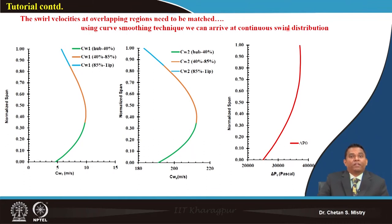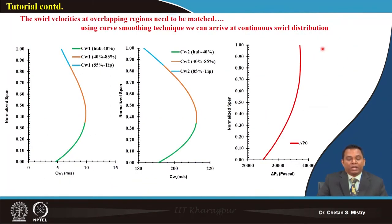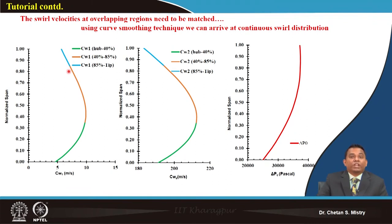Near the junction points at 40 percent and 75 percent span, the whirl component distributions may exhibit a zigzag pattern. Smoothing of the curve at those regions is required. The distribution of Cw1 is shown from 0 to 40 percent, 40 to 85 percent, and 85 percent to tip.